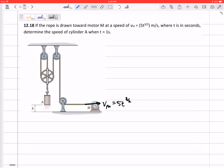All right, so we are already replacing this motor with kind of a hand that is drawing this rope with a velocity of 5t to the 3/2. This cylinder A is moving together with this pulley, so I like to box that in right there.